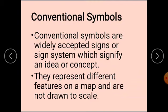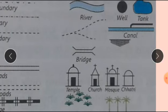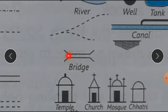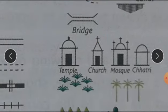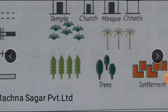Conventional symbols. These are universally accepted signs or symbols drawn on a map to represent certain features such as road, bridge, market, school etc. They represent different features on a map and are not drawn to scale. Here you can see symbols for bridge, trees, and many more symbols.